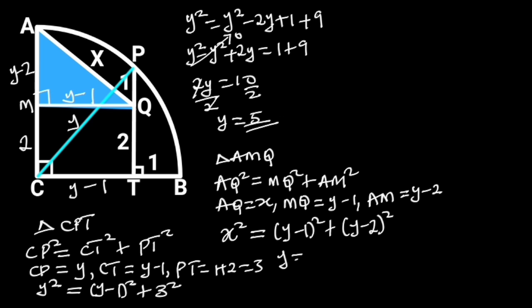But Y is equal to 5. So if we replace Y with 5 in the equation we will have X squared is equal to 5 minus 1 squared plus 5 minus 2 squared.